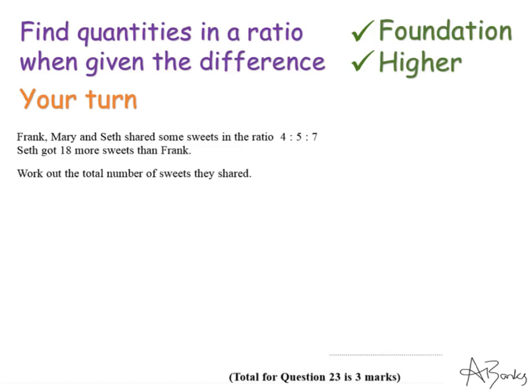Here's a question for you to try. This is a 3-number ratio and it's telling us that Seth got 18 more sweets than Frank. So this is Frank and this is Seth, and we know Seth needs to get 18 more than Frank. Pause the video and unpause when you're ready to see the solution.